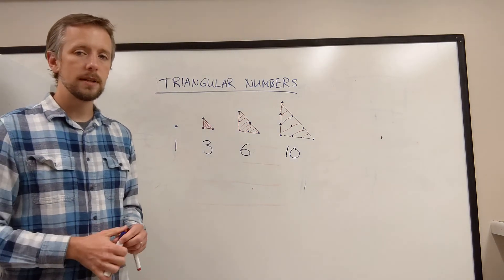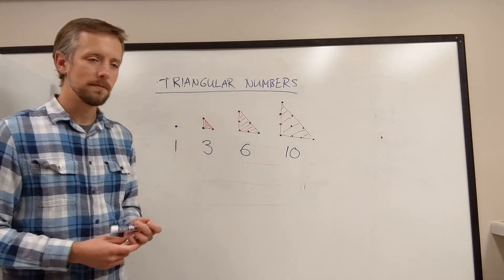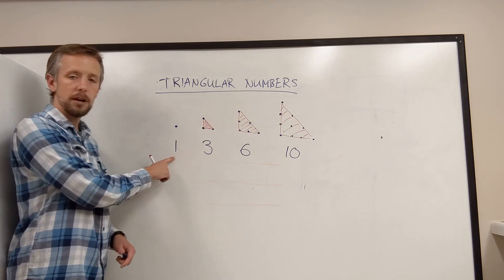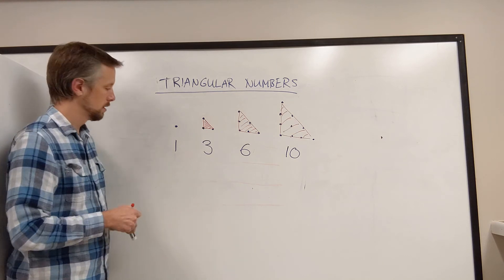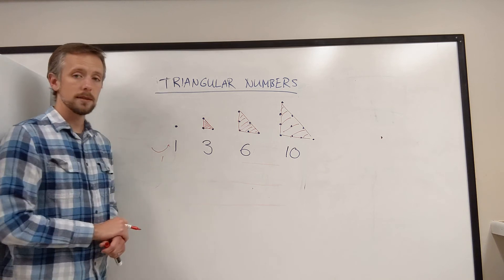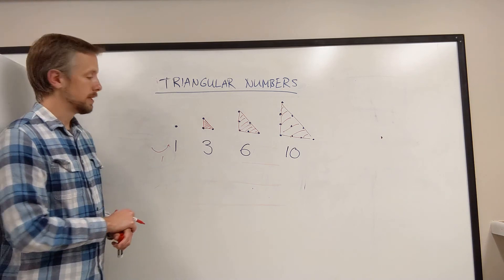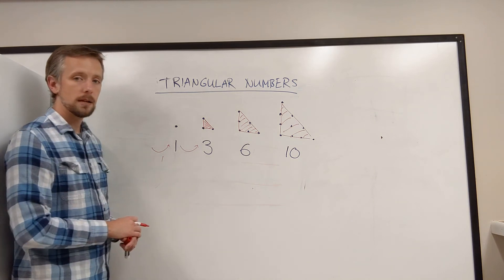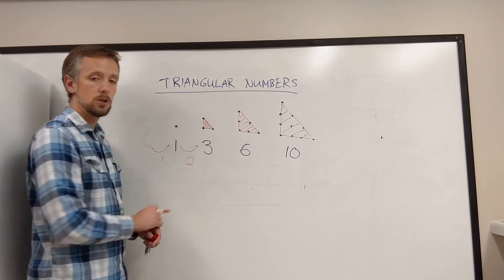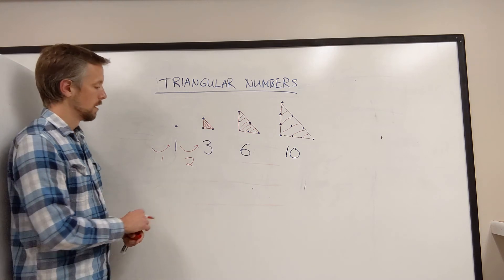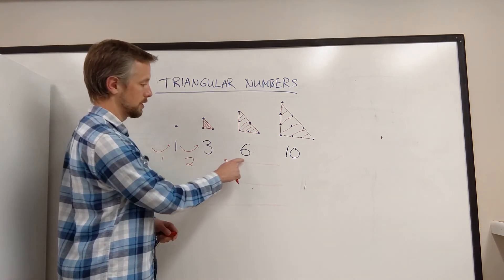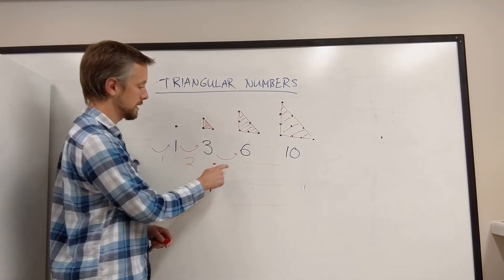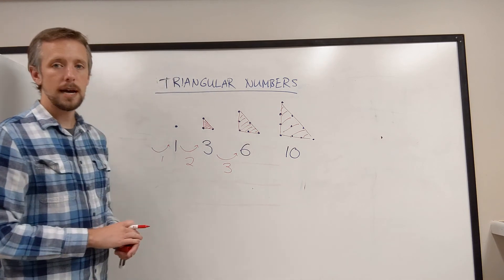Now let's see if we can see another pattern within the pattern. I started with nothing. To get to my first triangular number, I had to add 1 dot. To get from my first to my second triangular number, I had to add 2 dots. To get from that number to the next one, 6 minus 3 is 3, which means I had to add 3 more dots. Are you seeing the pattern within the pattern?